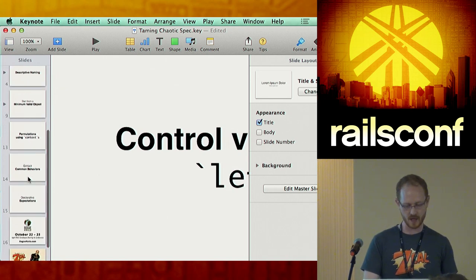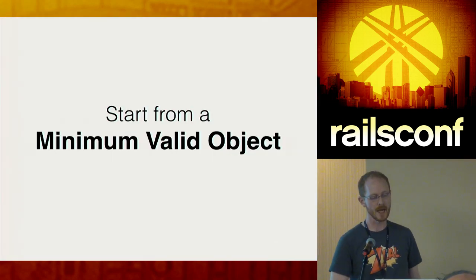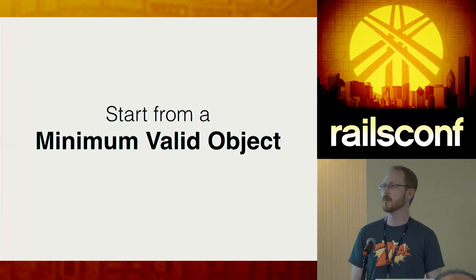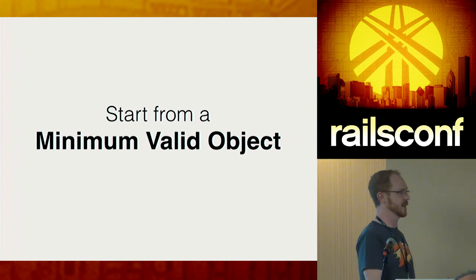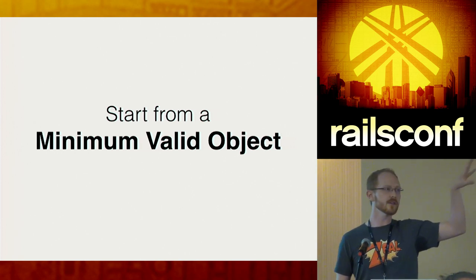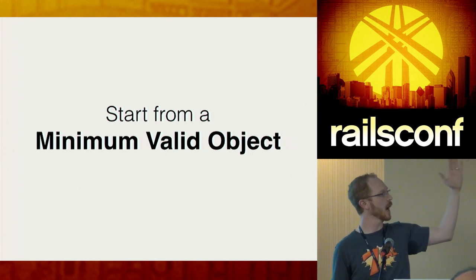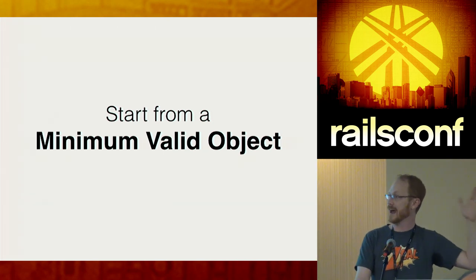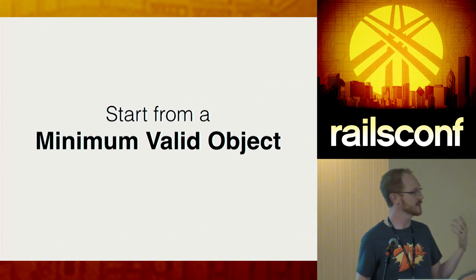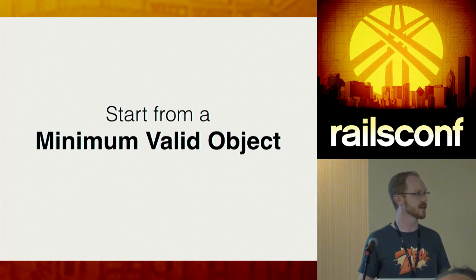One of the core principles we're going to talk about is the pattern of a Minimum Valid Object — an MVO. A minimum valid object is going to be, from the top of my spec, permutating through the remainder of it. Cascading down the list, I will always know that at the very top layer of my spec, the subject that I'm working with is valid. As I work through my spec and add more assertions, all I have to do is mutate the validity of the object and test against that — one piece at a time.